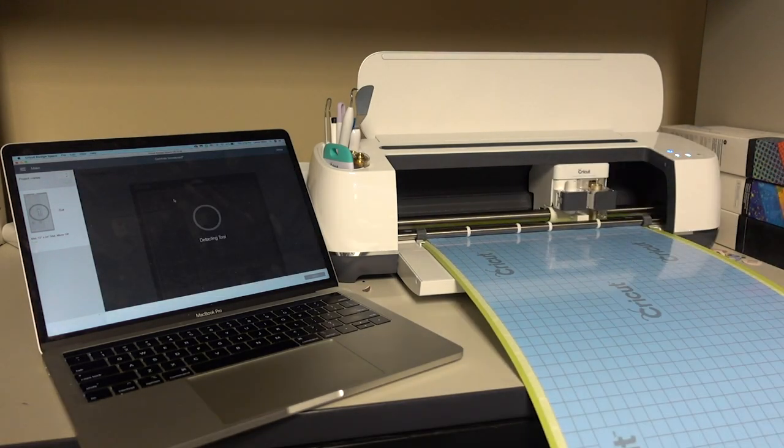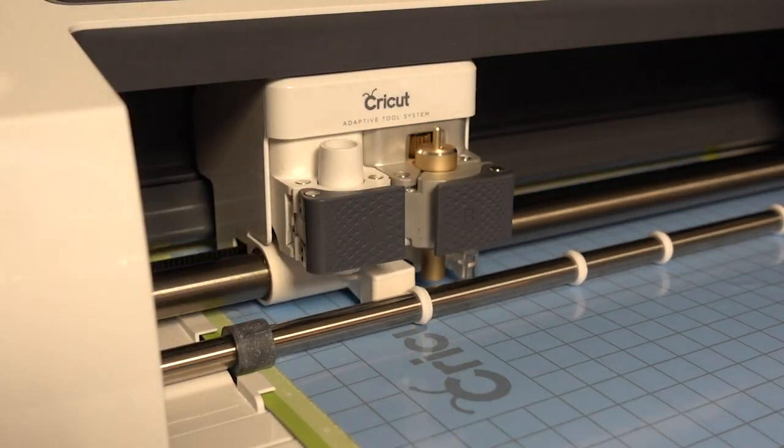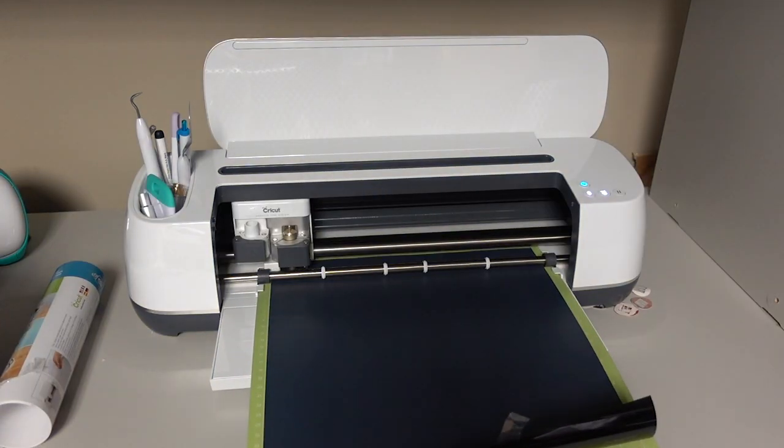When my designs are ready, I cut them on my Cricut Maker. Stencil vinyl for the scoreboard and base design, black Cricut iron-on for the personal branding.